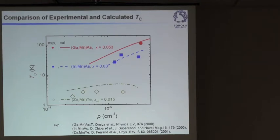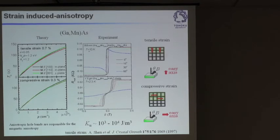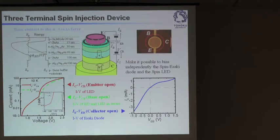This is an example of carrier concentration versus transition temperature, calculated using the model and compared with experimental results. As you can see, the model gives a reasonable account of what we see in experiment for the three compounds chosen. Let's skip the next part because of the shortage of time.